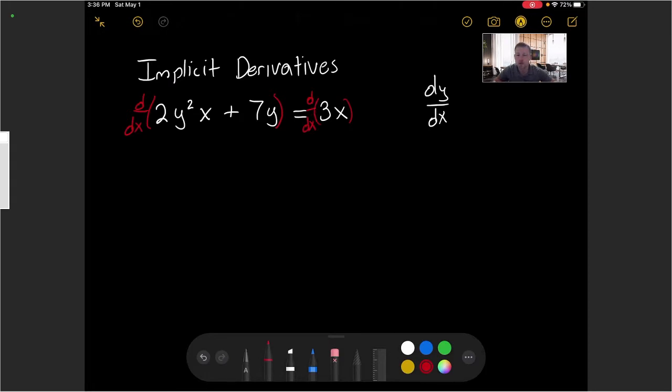Let's go through each term left to right. The first term is probably the most interesting term in this equation. We have a product of x and y, 2y² times x.